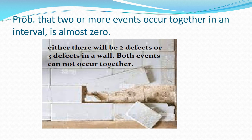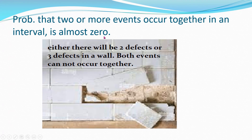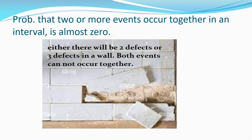The second assumption is that the probability that two or more events occur together in an interval is almost zero. For example, here one wall is the interval. So either we will have two defects in one wall or three defects — these two events can't occur together. This is the second assumption of Poisson distribution. In real life, if it's not strictly zero, because I'm only discussing about a wall, but once you explore different examples you will understand that theoretically speaking the probability is zero that two or more events occur in a single interval.